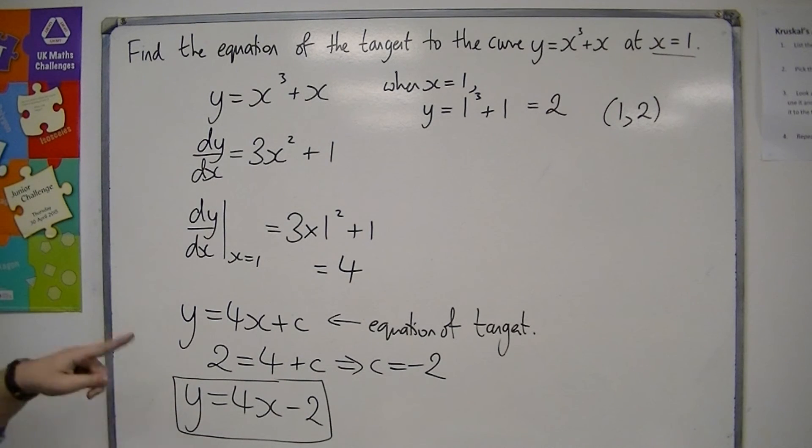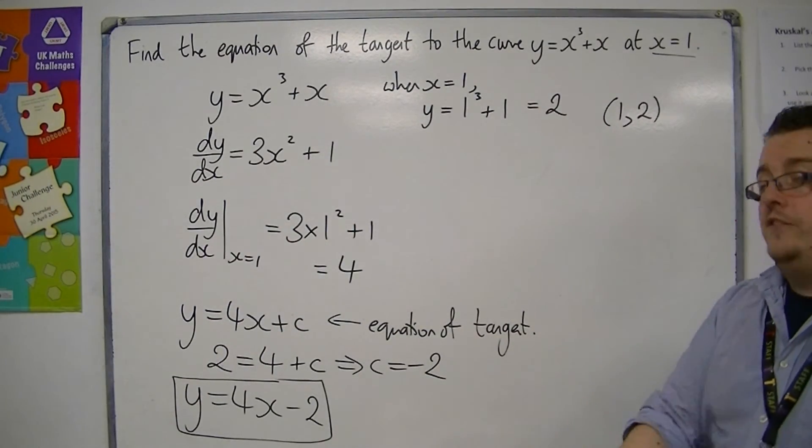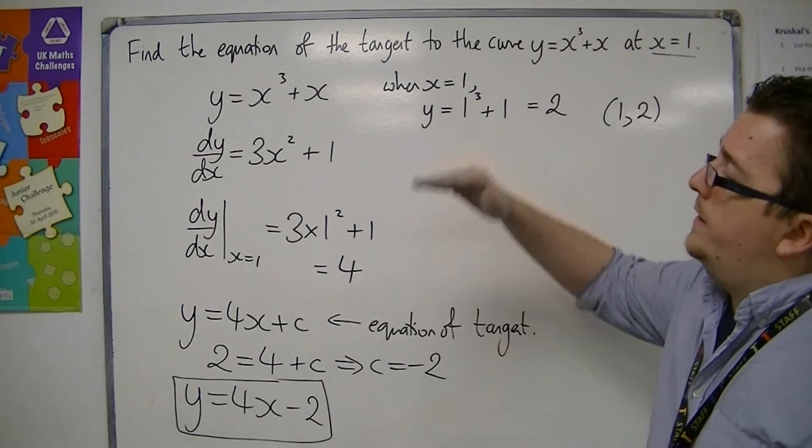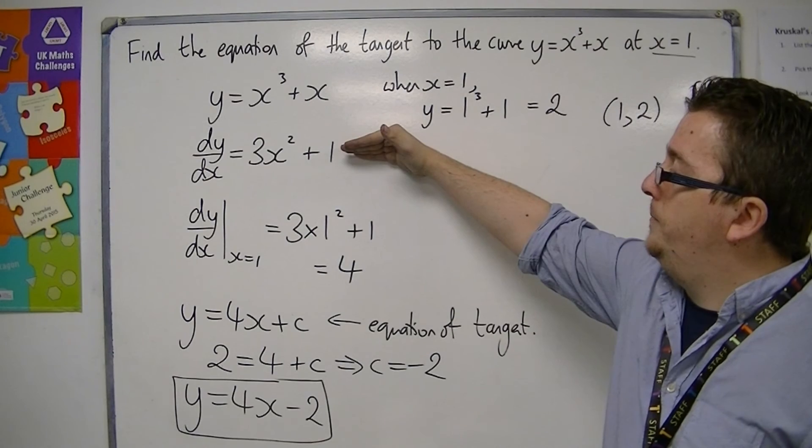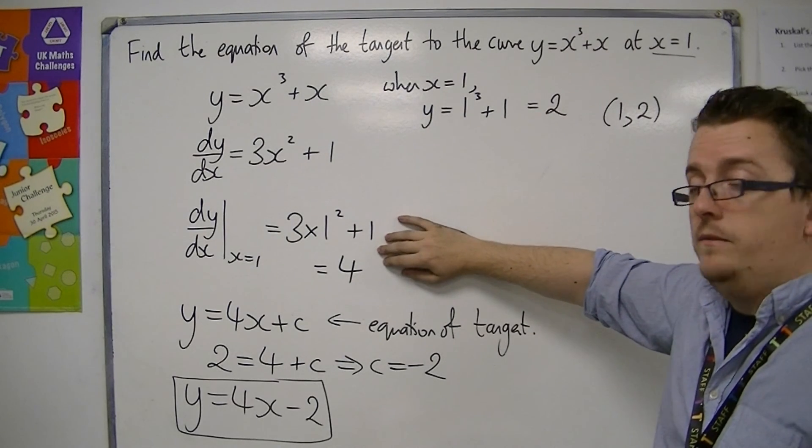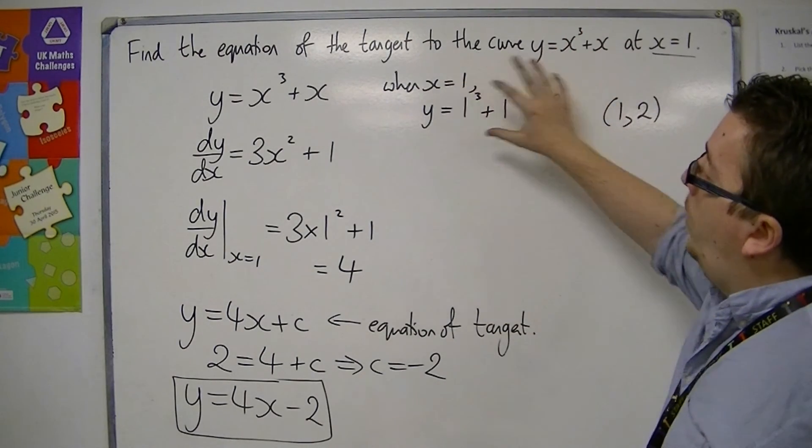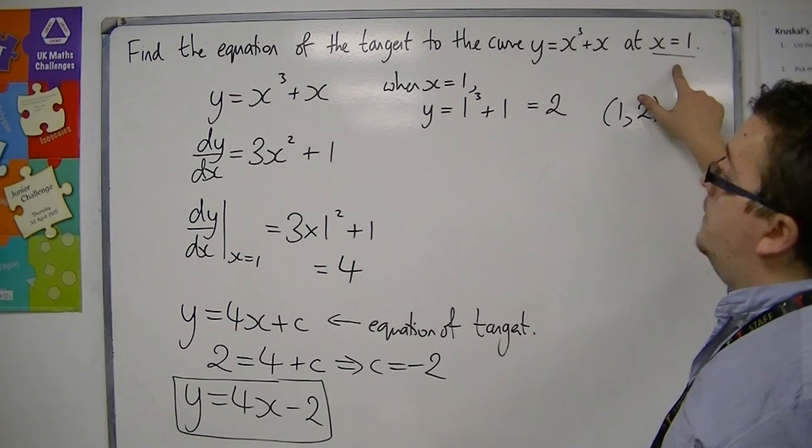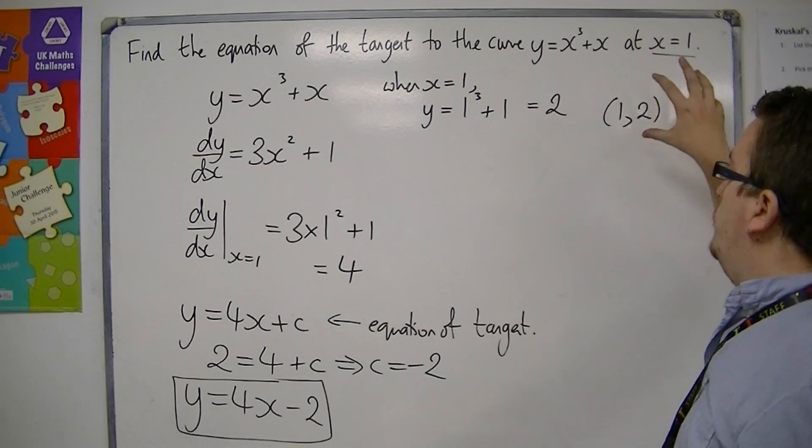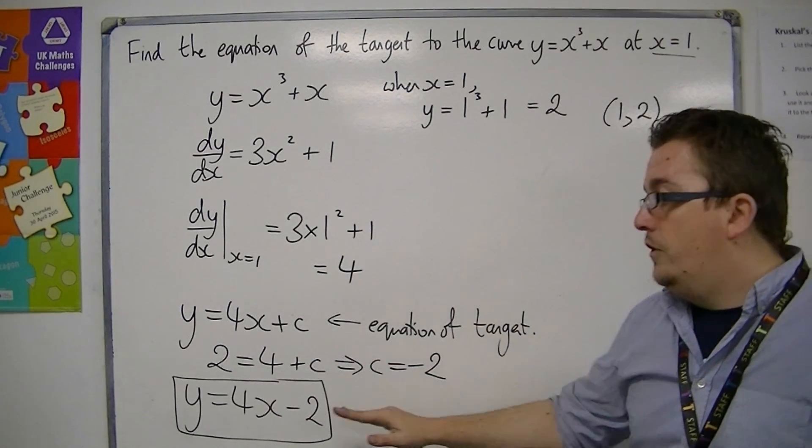This is the equation of the tangent to the curve at x equals 1. So there's a few little things you need to do. We need to work out the first derivative, dy by dx. We need to evaluate the derivative at the point we're looking at to get us the gradient of the tangent. And then we need to find the y value for the corresponding x value, which will allow me to then work out the constant c and the final equation.